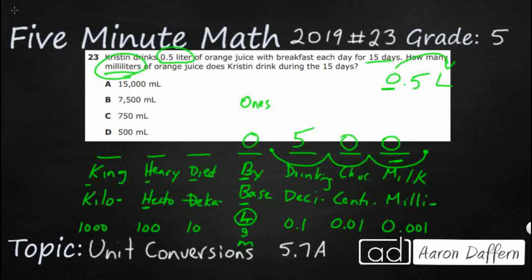So now I'm going to have 500. Our first conversion is: 0.5 liters equals 500 milliliters. Now do not choose that — that is the incorrect answer. Half a liter is 500 milliliters, which makes sense because a thousand milliliters makes one full liter. But remember, she did it for 15 days, so we're going to have to multiply 500 by 15. That's why 500 alone is incorrect.